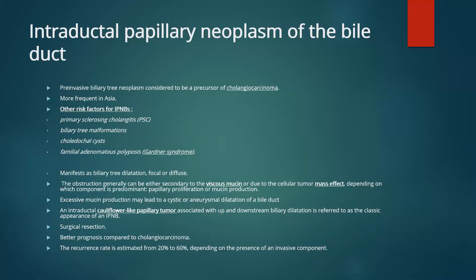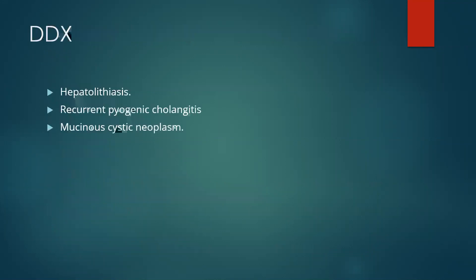The management for this lesion is surgical resection. However, it carries a better prognosis than classical cholangiocarcinoma. The recurrence rate is estimated from 20% to 60%, depending on the presence of invasive components. Differential diagnoses include hepatolithiasis, recurrent pyogenic cholangitis, and mucinous cystic neoplasm.